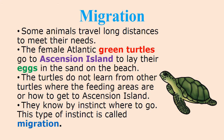Migration. Some animals travel long distances to meet their needs. The female Atlantic green turtle goes to Ascension Island to lay their eggs in the sand or on the beach. The turtles do not learn from other turtles where the feeding areas are or how to get to Ascension Island — they know by instinct where to go. This type of instinct is called migration.